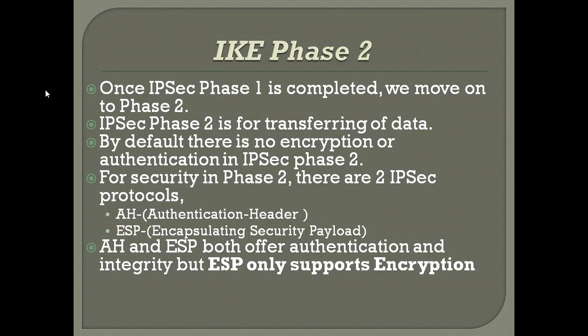Phase 2 is mainly used for data transmission from one end to another — that is, between the peer ends the data should be transmitted. For the data transmission we are creating a Phase 2.